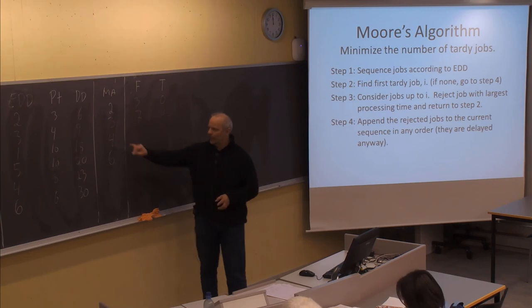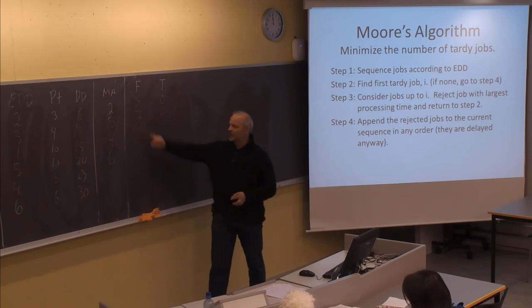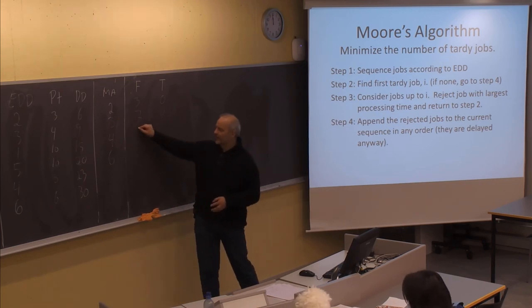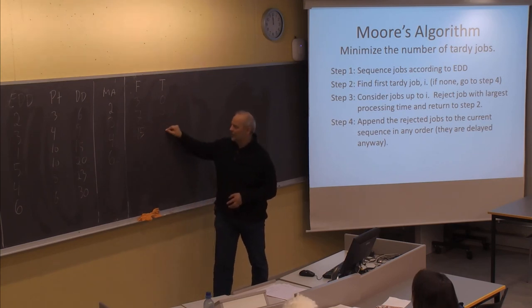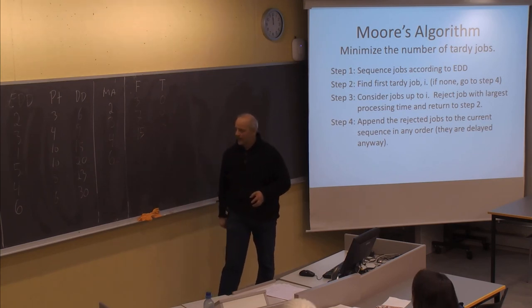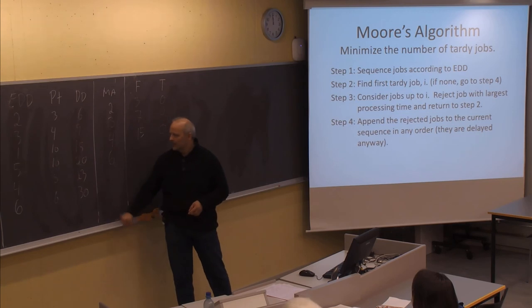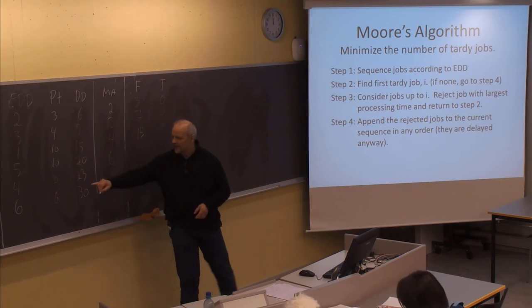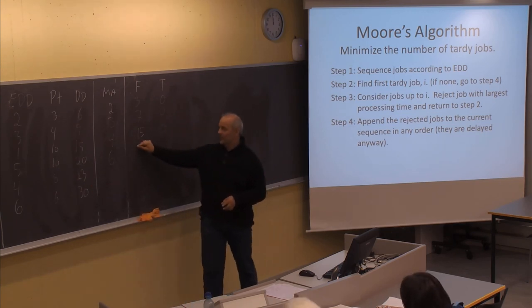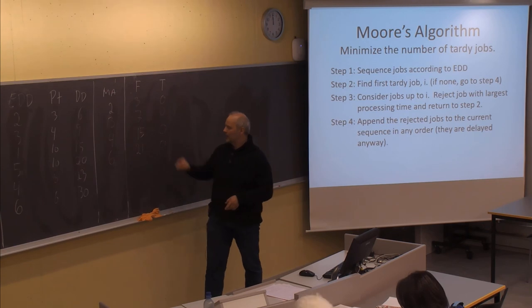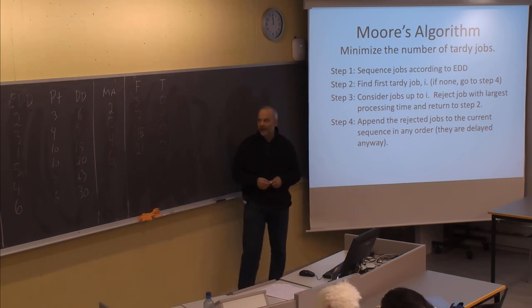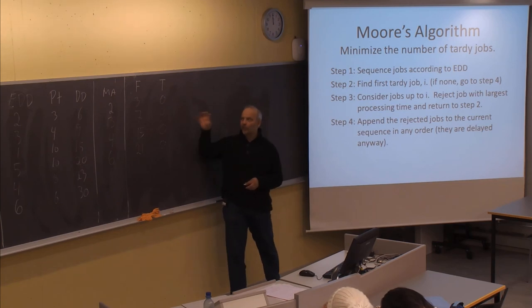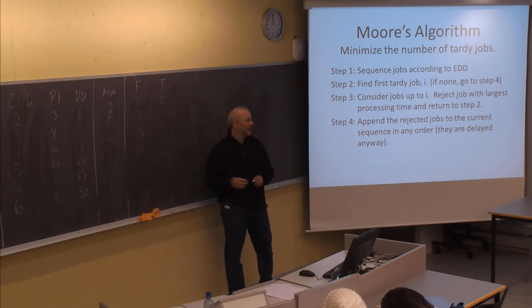Job number 4 takes 8 days, starting on day 7, finished by day 15 — not delayed. Job number 6 takes 6 days, starting on day 15, finished by day 21 — not delayed. We now have a schedule of 4 jobs which are all in time.